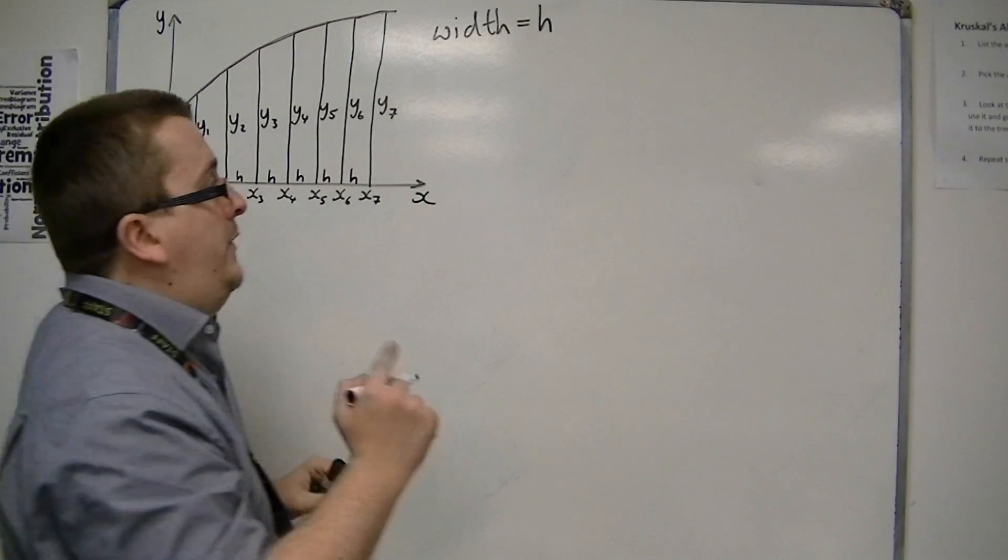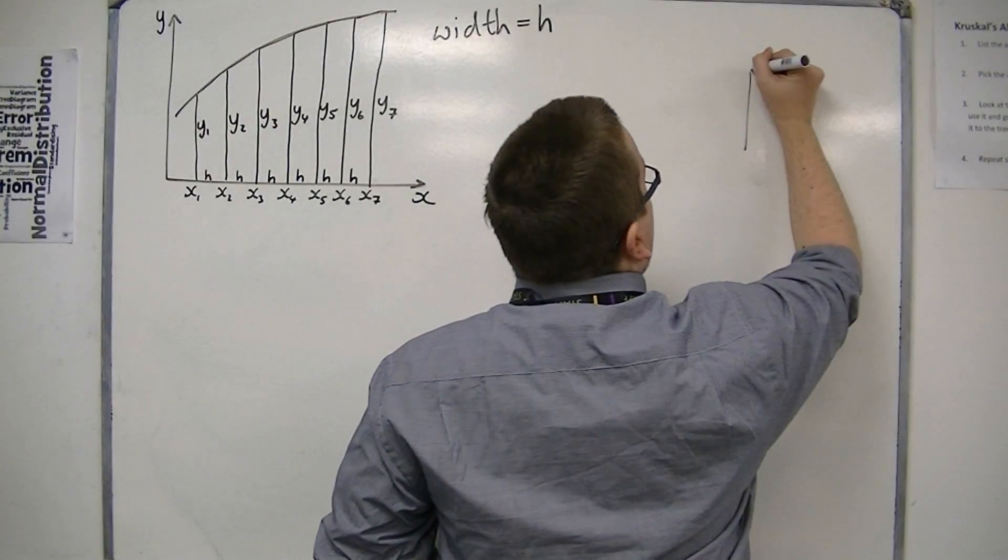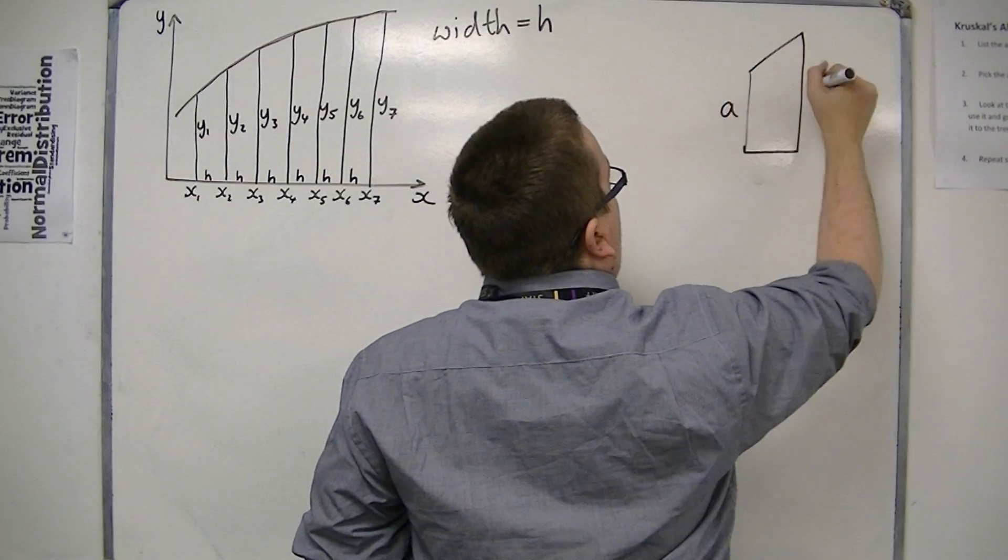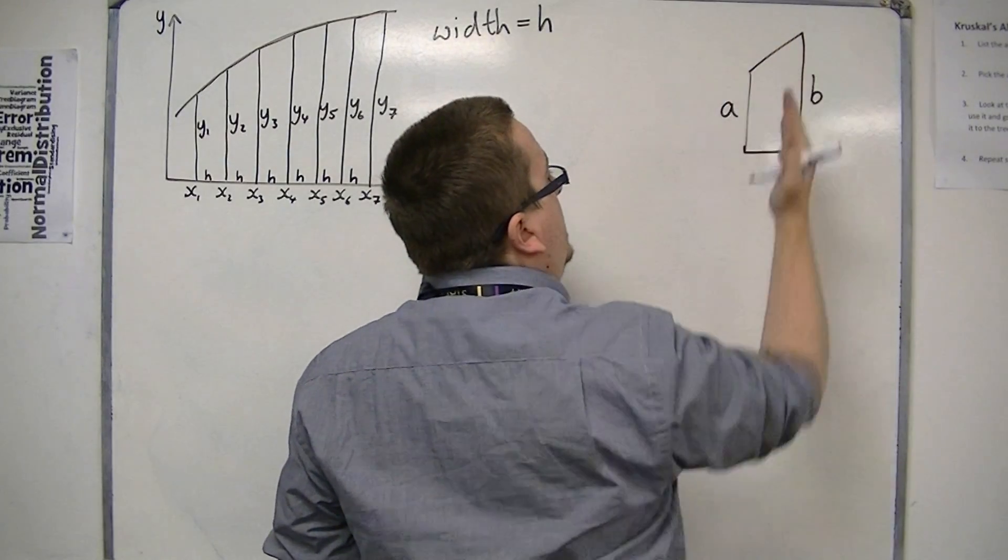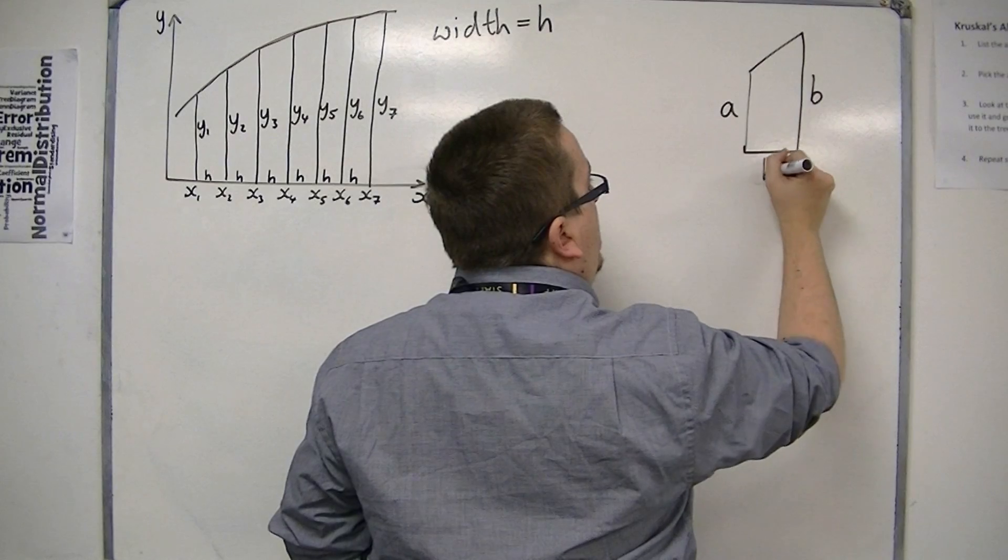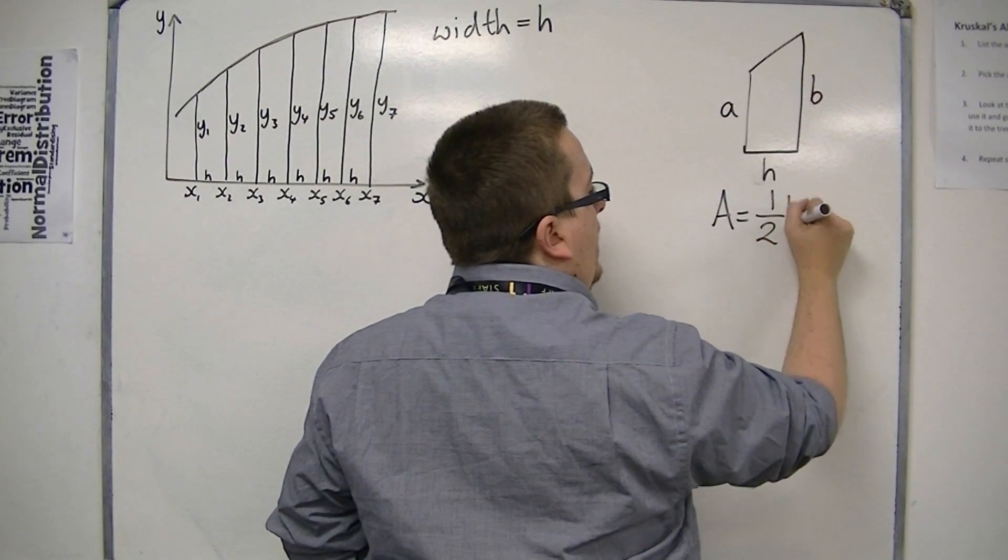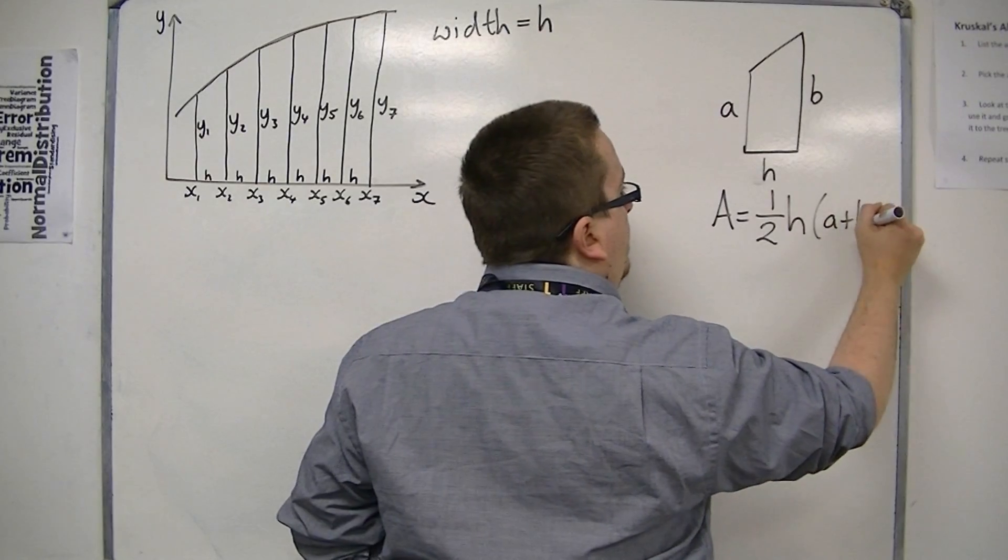Now the area of a trapezium, if it has two heights of a and b, and a width of h, then the area is one-half h times a plus b.